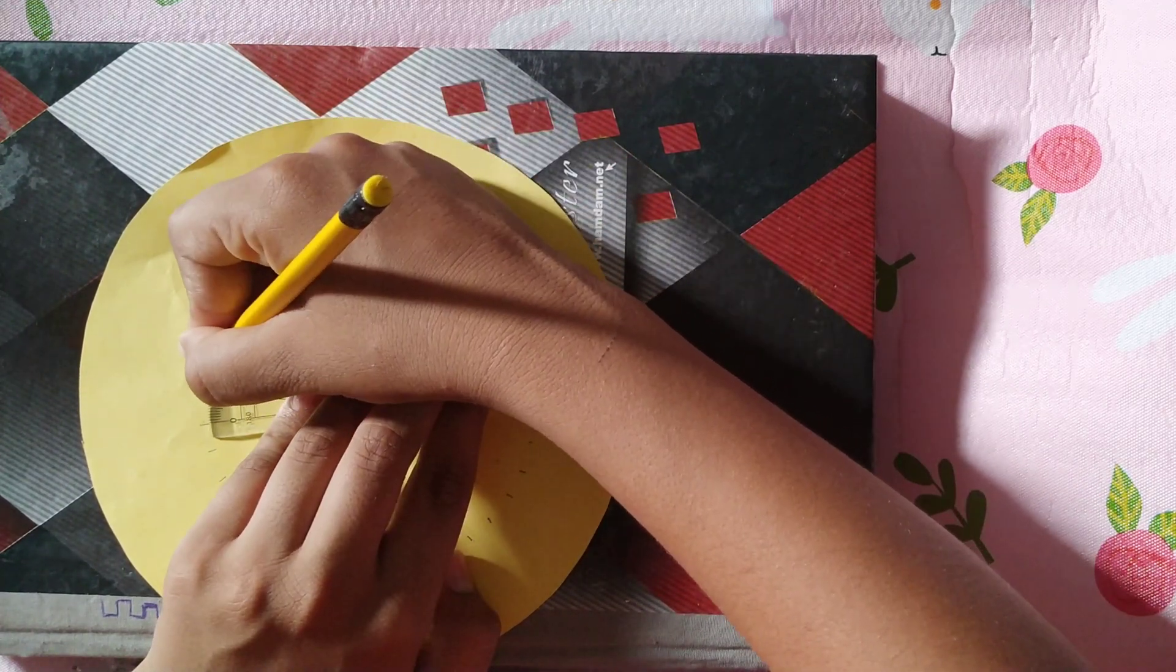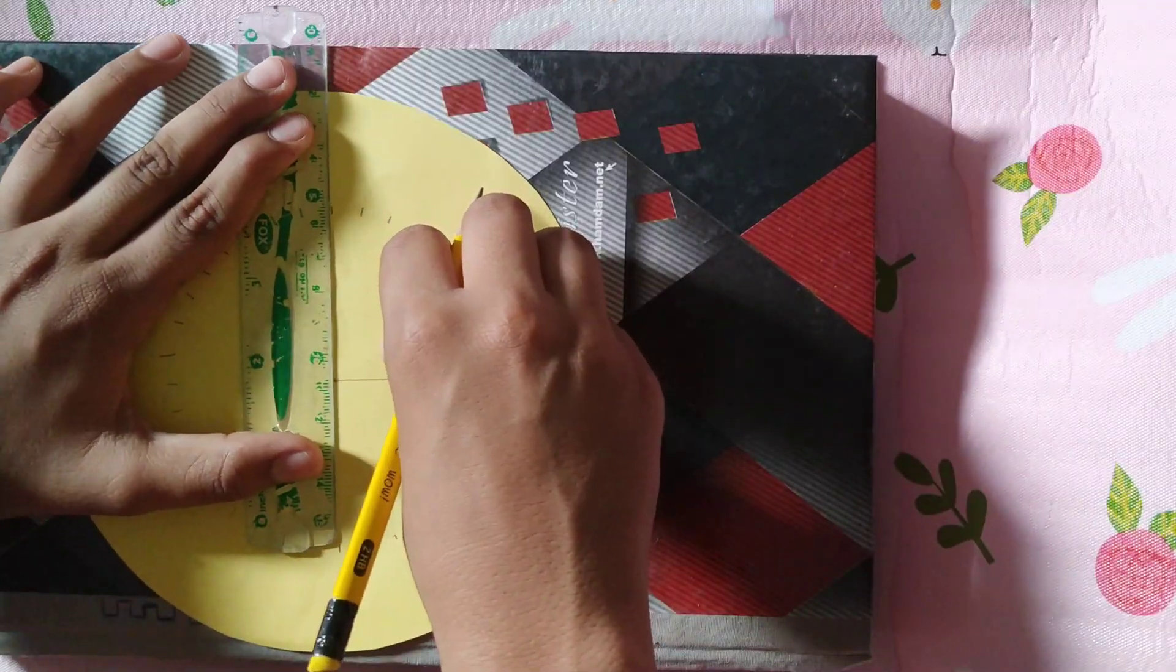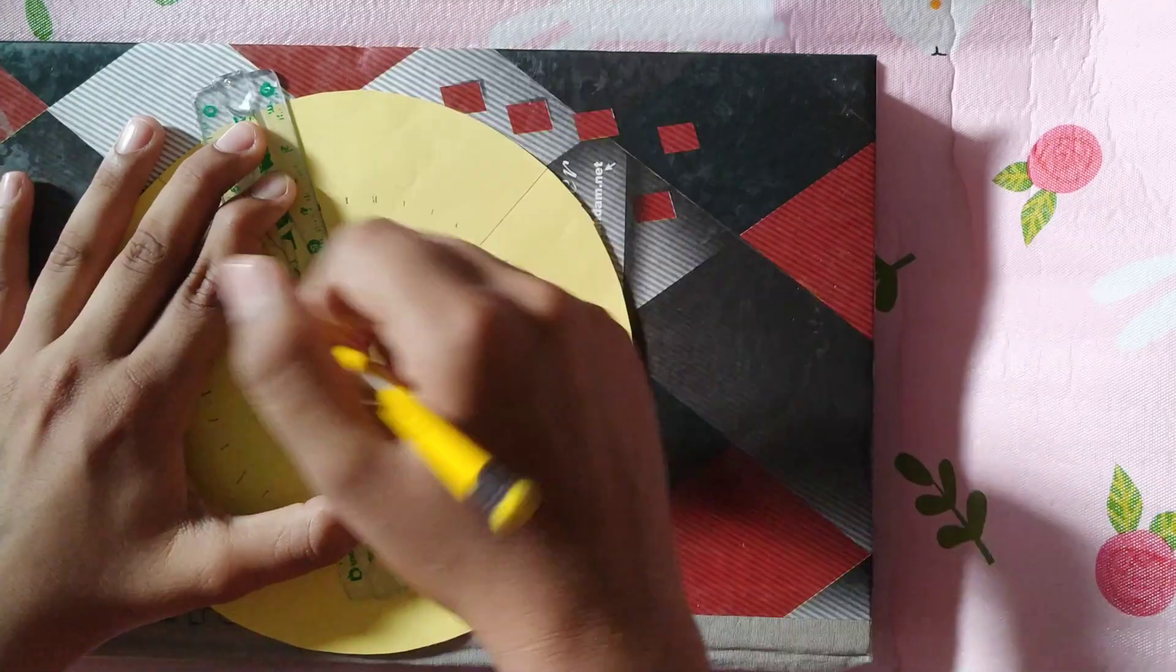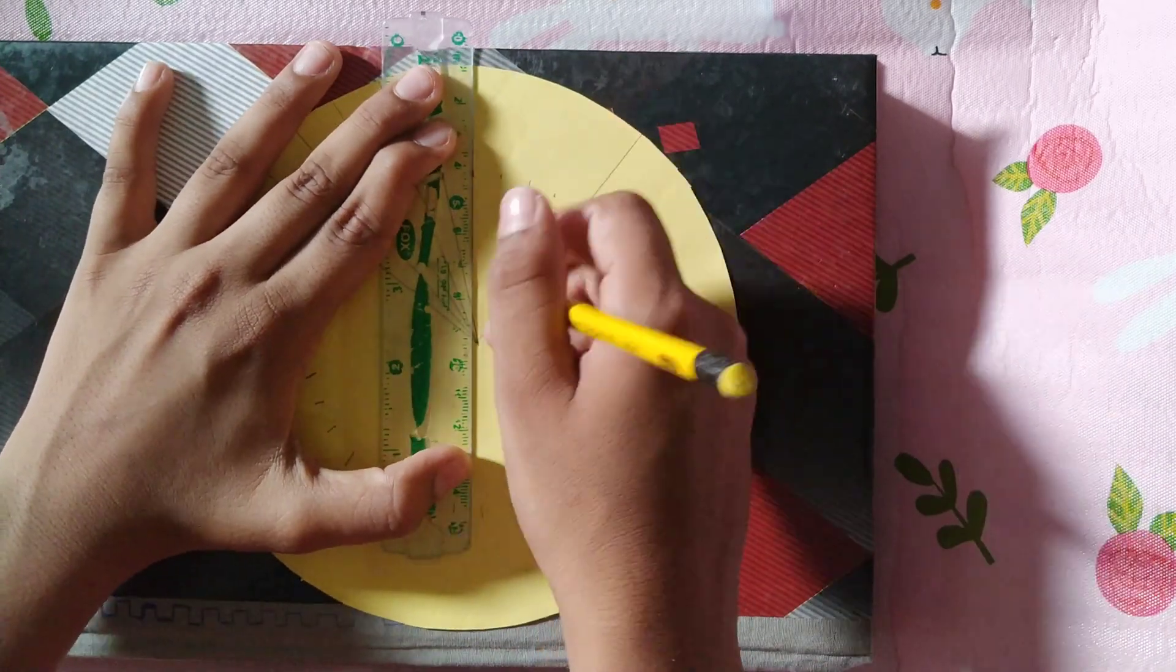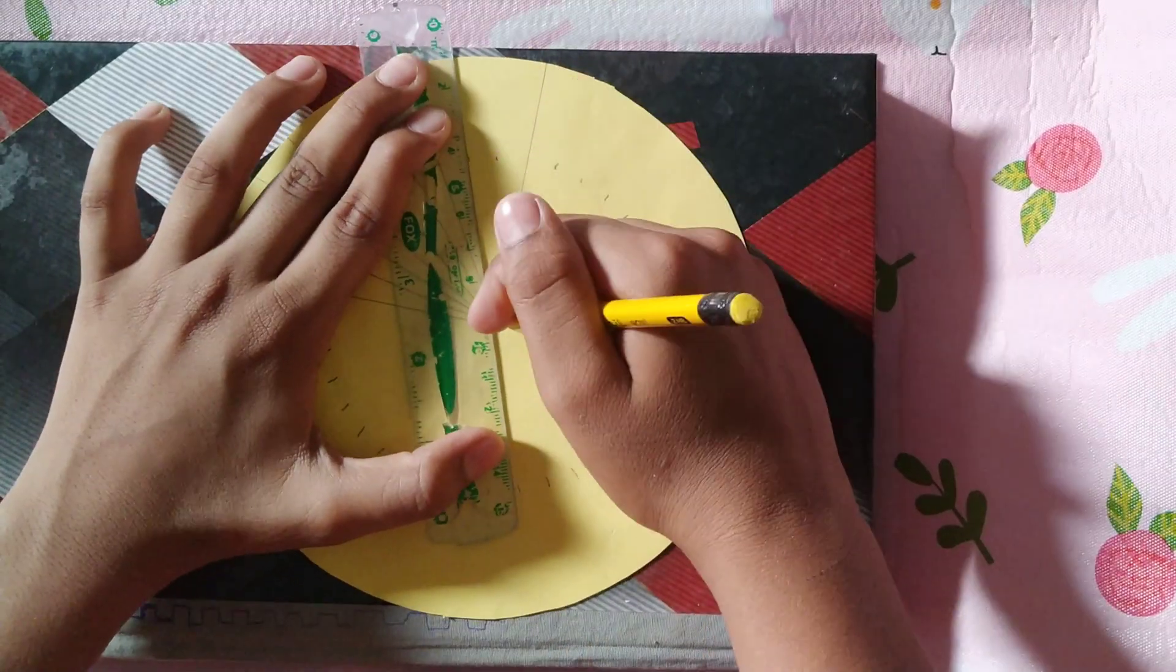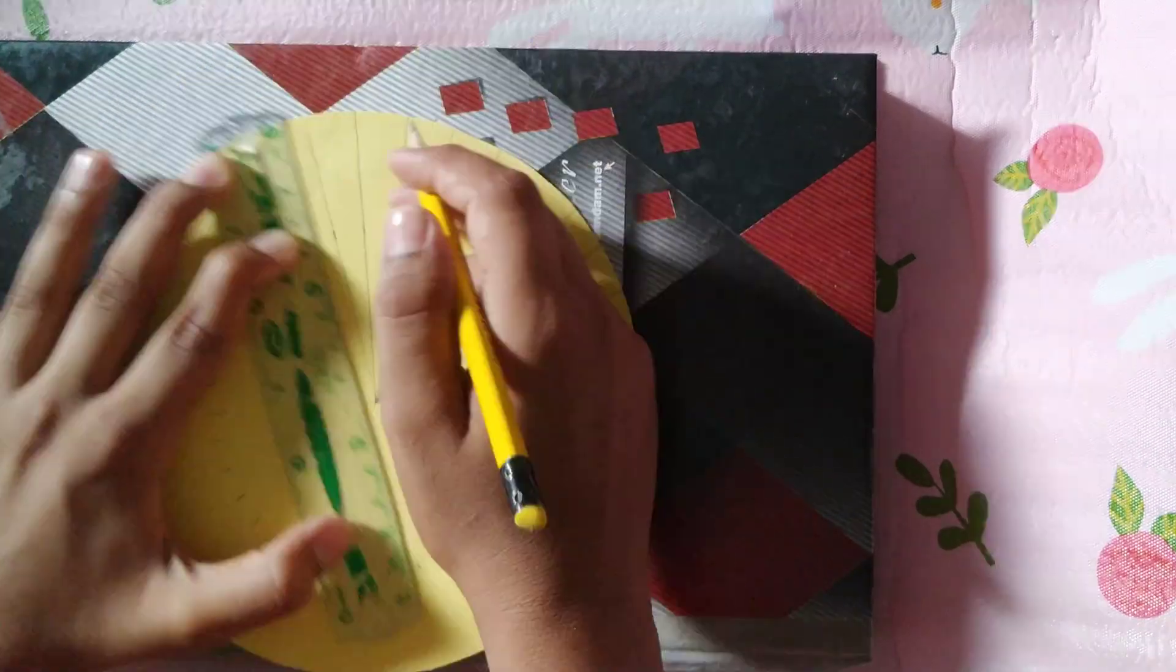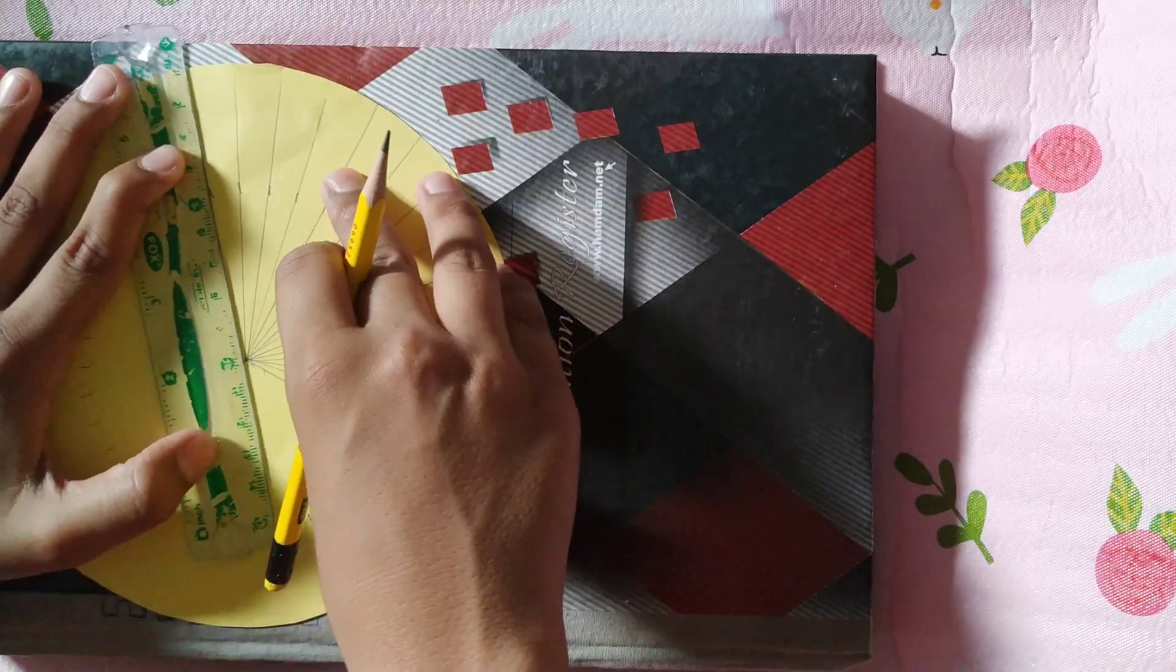So now you can see, as you can see now, I have made all the angles till 360. So now we are going to make a line in the middle, and then we are going to start making all of it. Like we are going to start making the angles, we are going to start pointing the angles that we have already done.